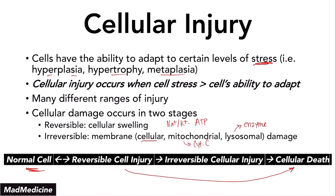Pretty straightforward. So the way things die depends on the mechanism that is causing the cells to die. There are two main things you need to know — we've discussed this in our previous lecture on cell injury. Cells can die through either necrosis or apoptosis. In this video, obviously, we're going to be talking about necrosis, so let's dive right in.